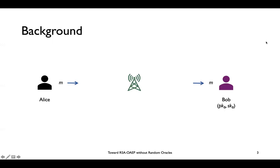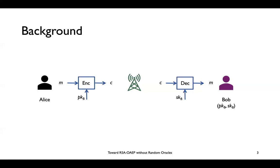I will start by going over the definition of public key encryption schemes. We use public key encryption schemes to transfer confidential messages through the internet. In this model, everyone has a pair of keys: public key and secret key. For example, if Alice wants to send a message through the internet to Bob, she uses the public key of Bob to encrypt the message M and get the ciphertext, sends it to Bob, and Bob uses his own secret key to decrypt and get the message M.